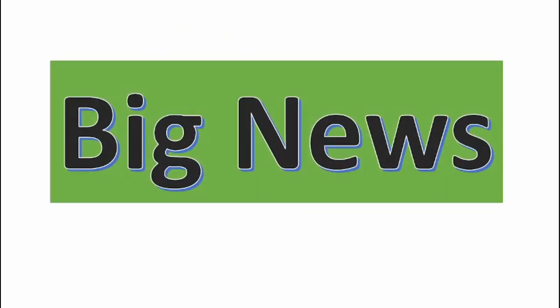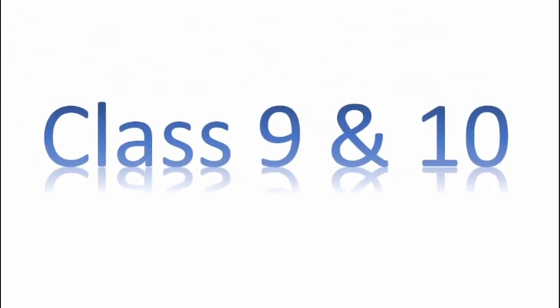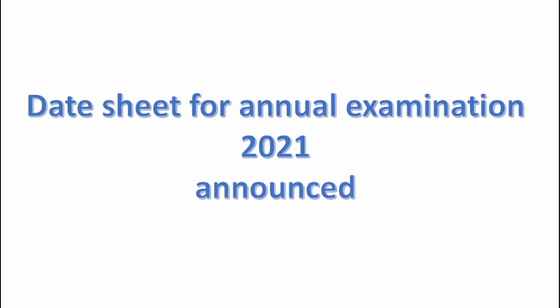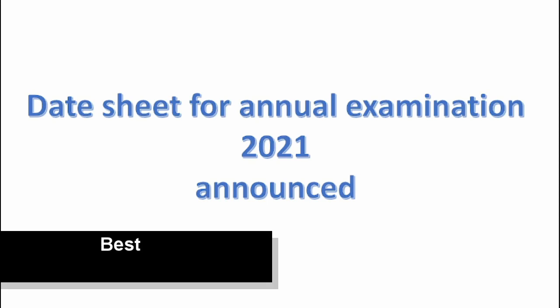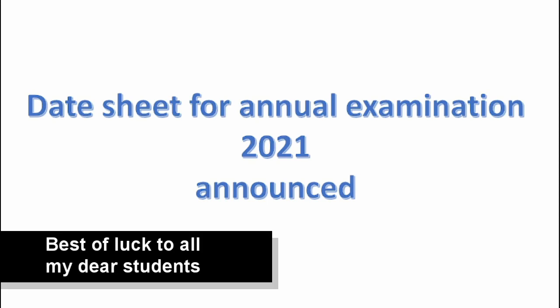Okay students, I have very big news for you — and this news is for Class 9 and Class 10 students. This is a very important news: the date sheet for the annual examination 2021 Karachi board has been announced. First, we will discuss the Class 10 examination, and after that we will discuss the Class 9 examination date sheet.